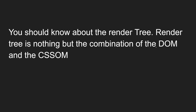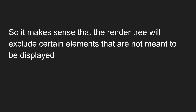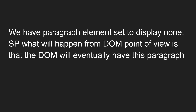You should know about the render tree. The render tree is the combination of the DOM and the CSS. What separates the DOM from the render tree is that the render tree only consists of what will eventually be painted on the screen — what is visible. It makes sense that the render tree will exclude elements not meant to be displayed. We have a paragraph set to display none — from the DOM's point of view, the DOM will have this paragraph, whereas the render tree will exclude it because it is set to display none.